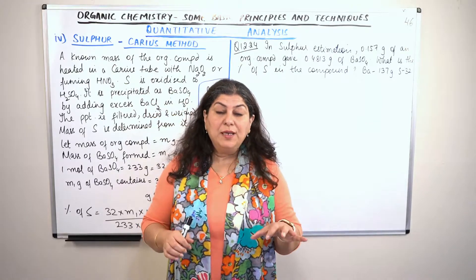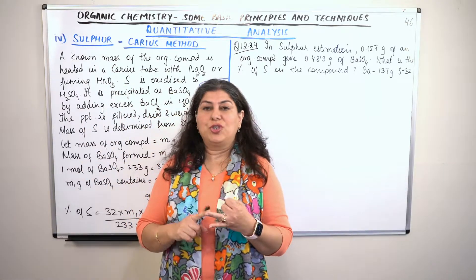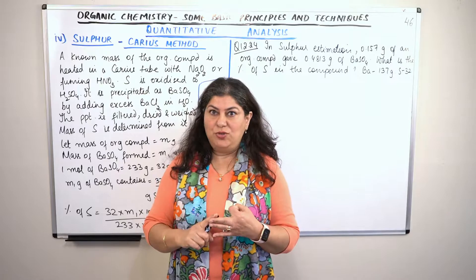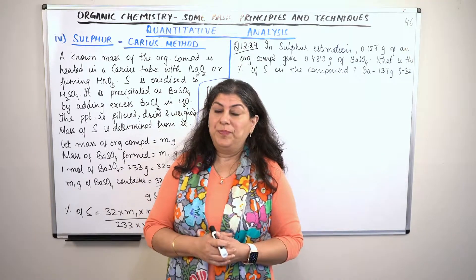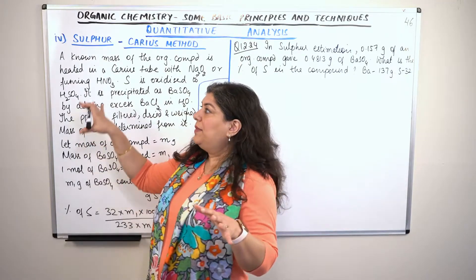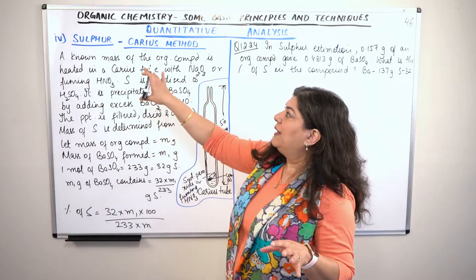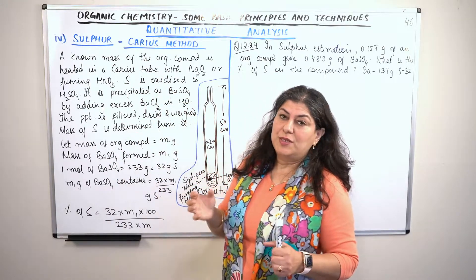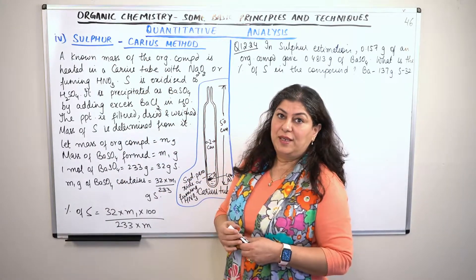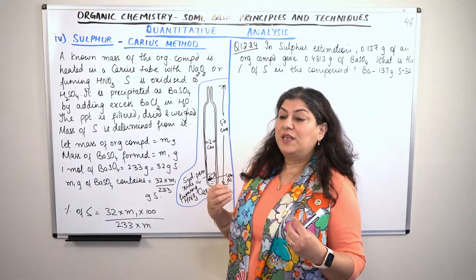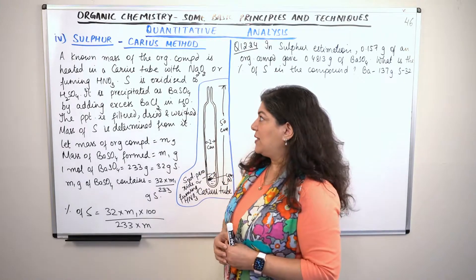We have done the quantitative analysis of carbon, hydrogen, nitrogen, and halogens. Now we will do the estimation of sulfur — how to identify or calculate the mass percentage of sulfur.